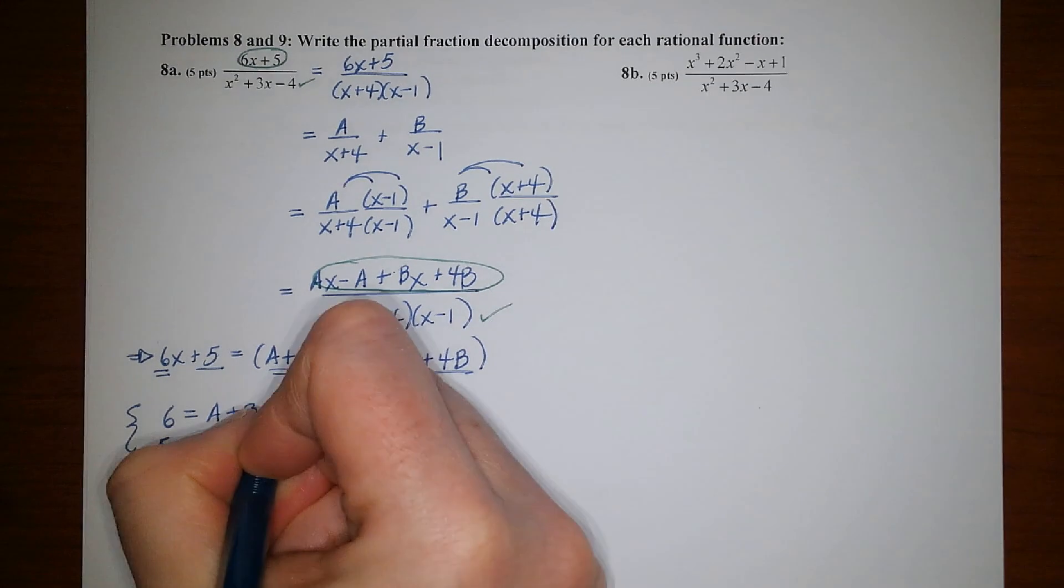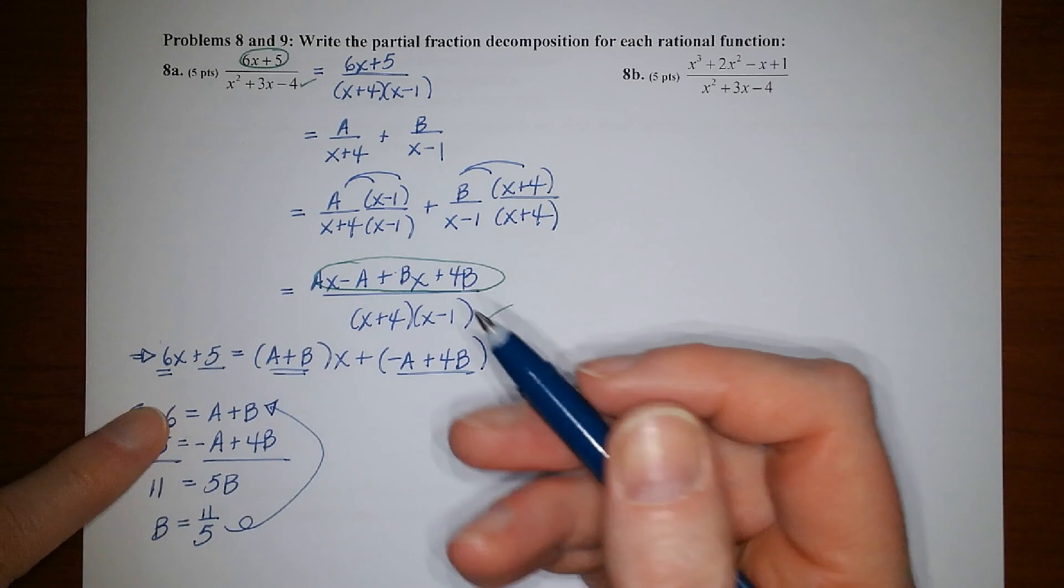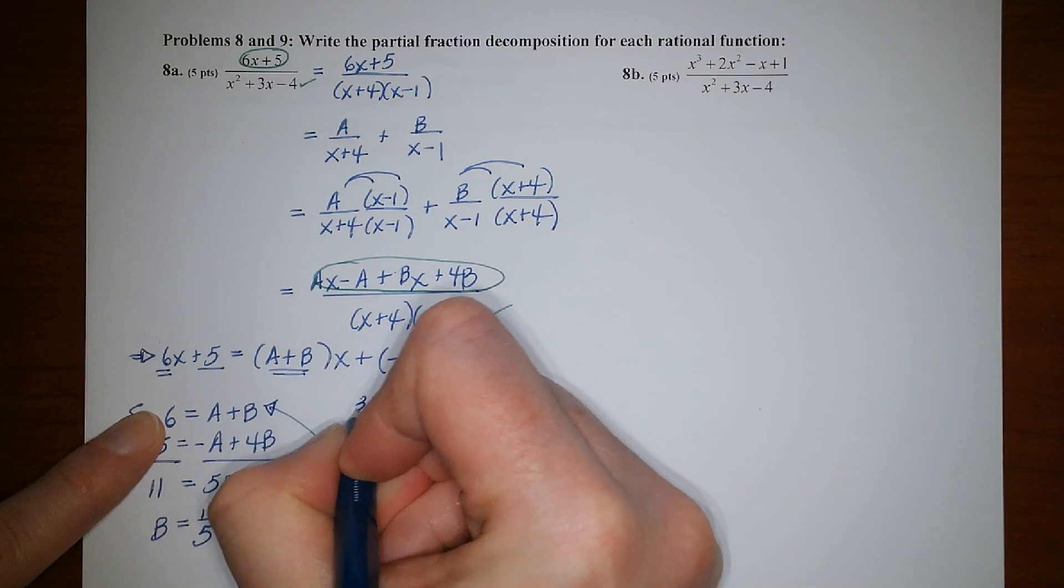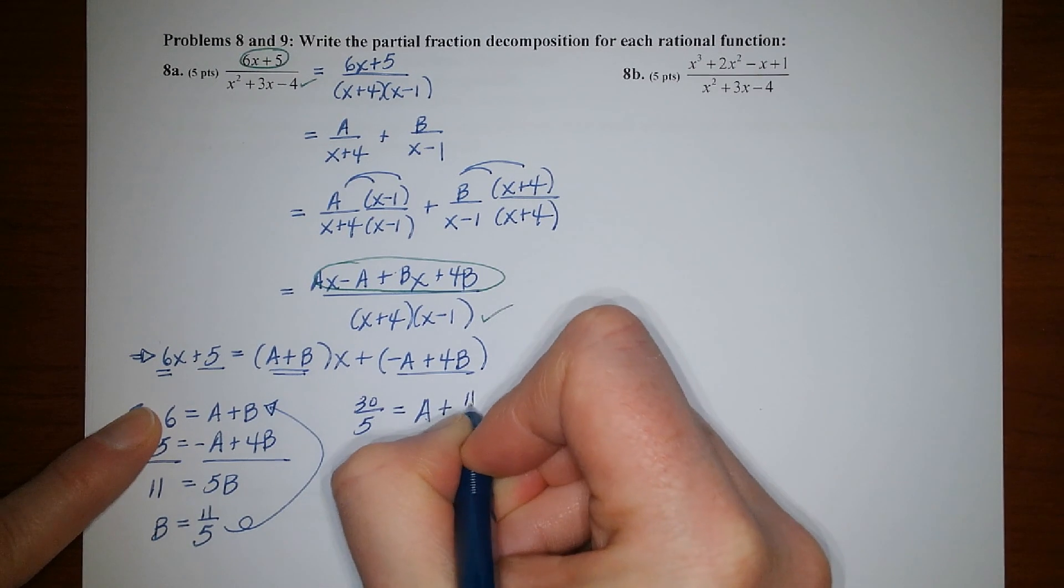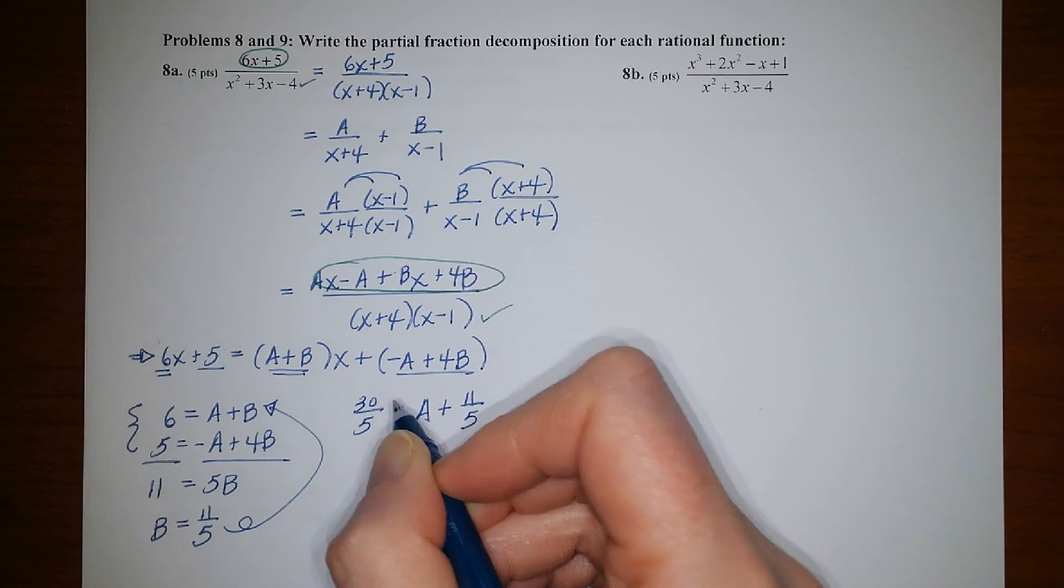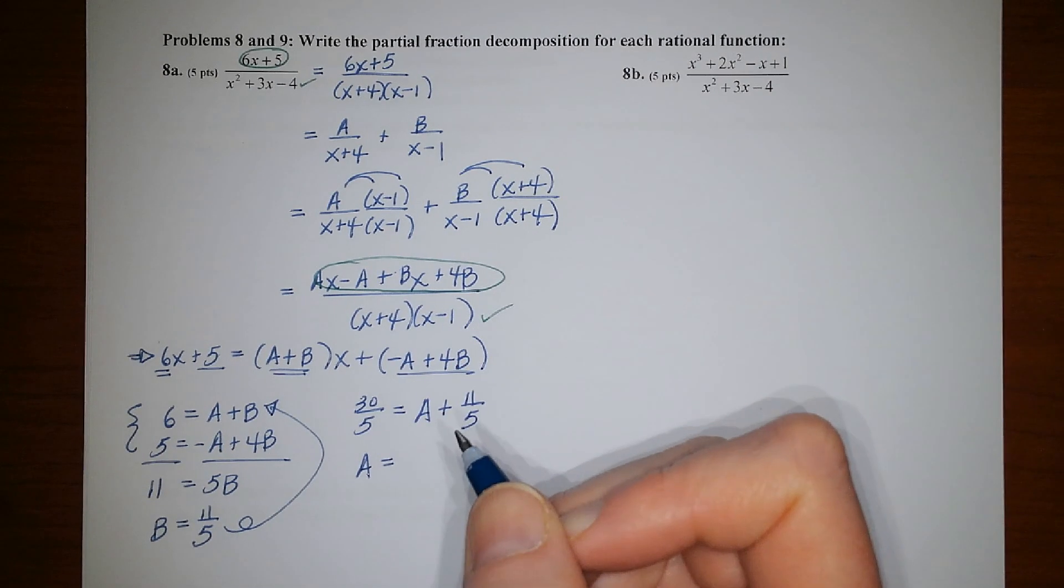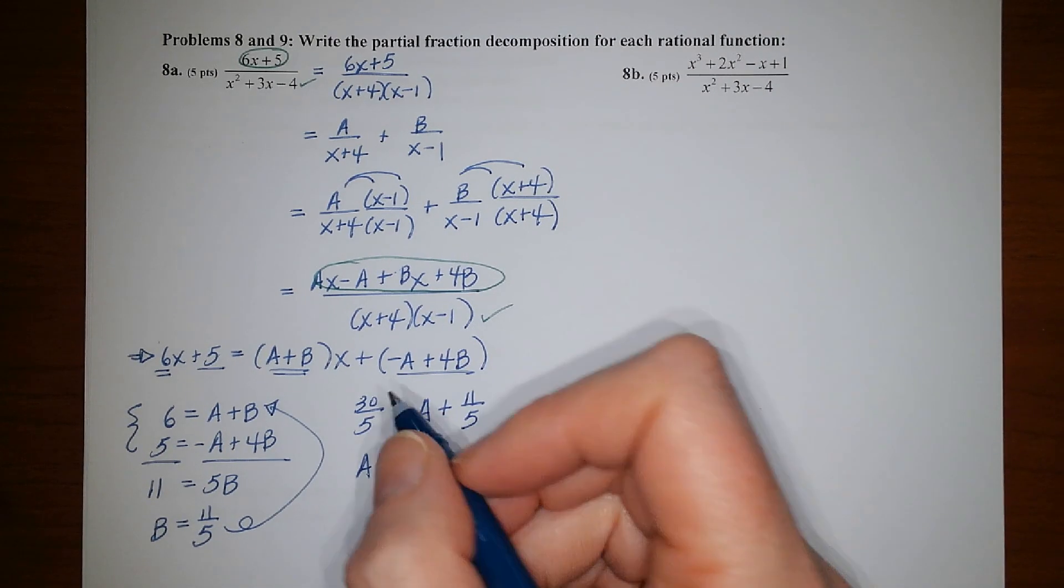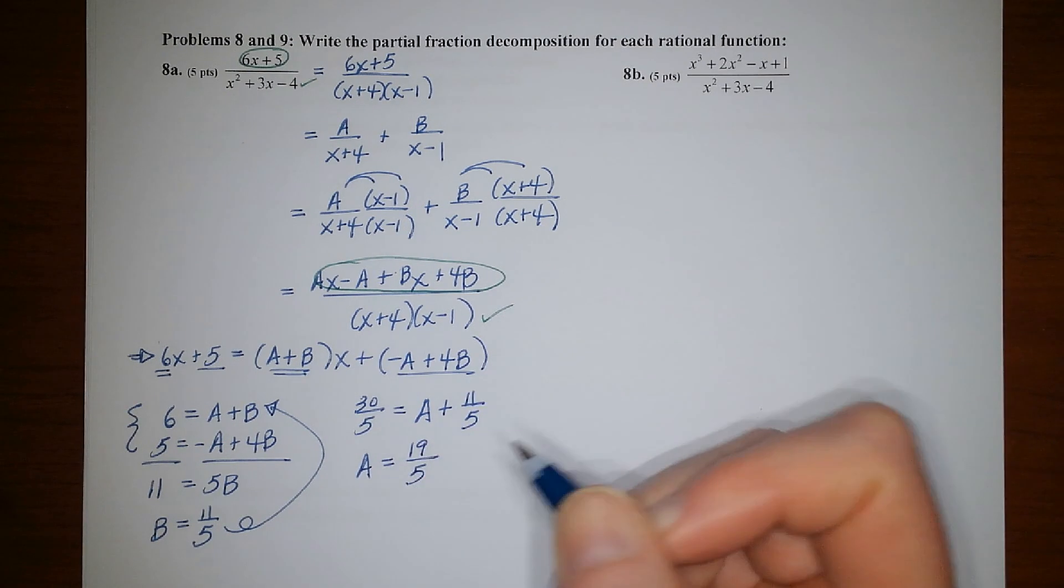And then to figure out what A is, I would back substitute right there. 6 right there. The 6 is equal to 30 over 5. And that would equal A plus, and B is 11 over 5. So you could just subtract the 11 over 5 over, and you'd end up with, what would that be? Is that 19? I think it is. Yeah. Okay.